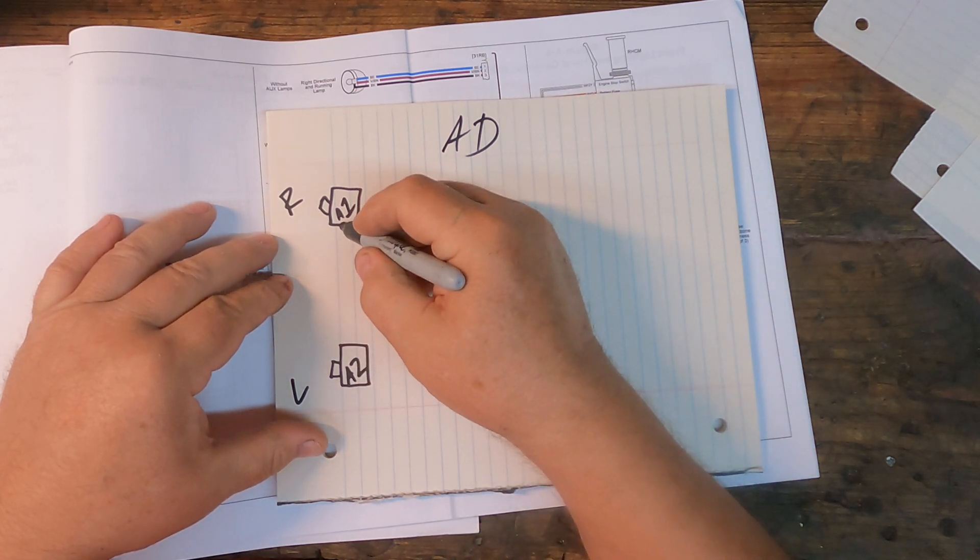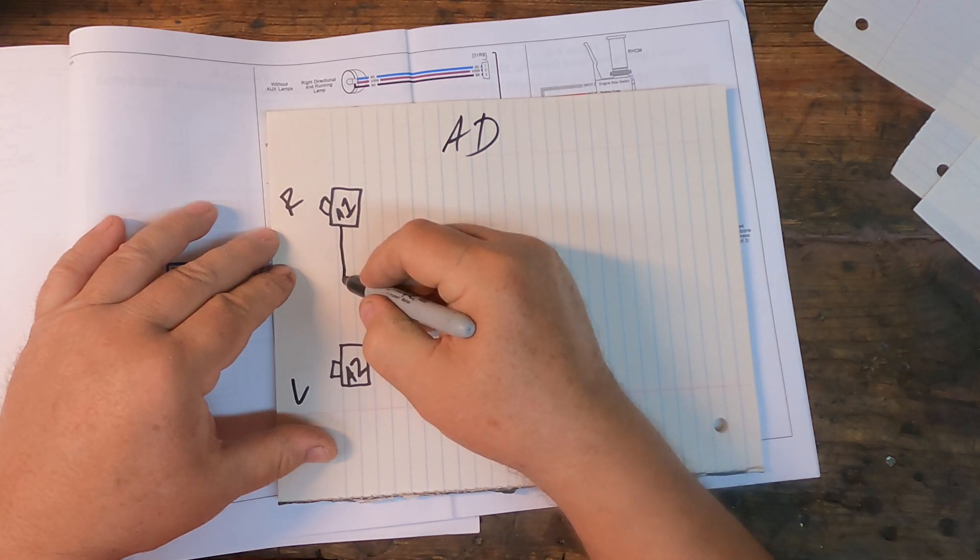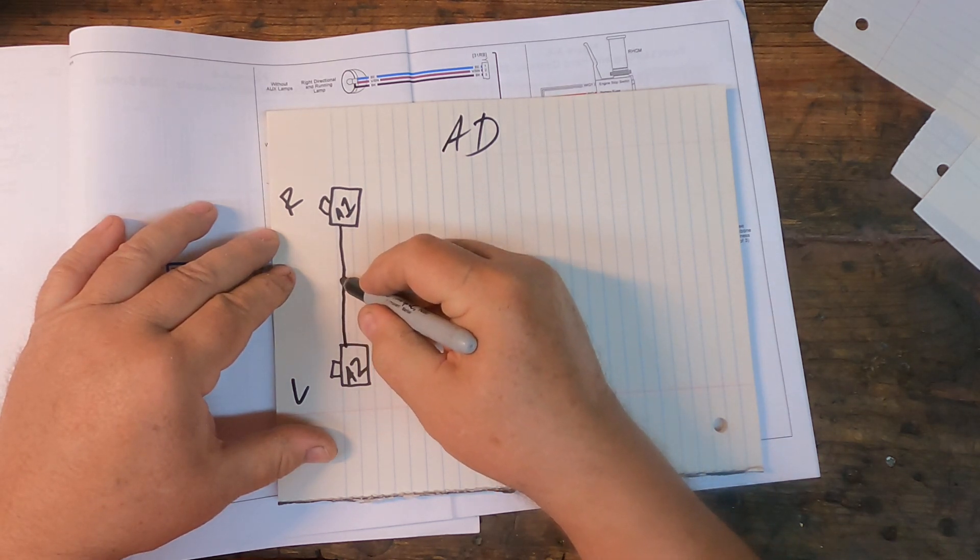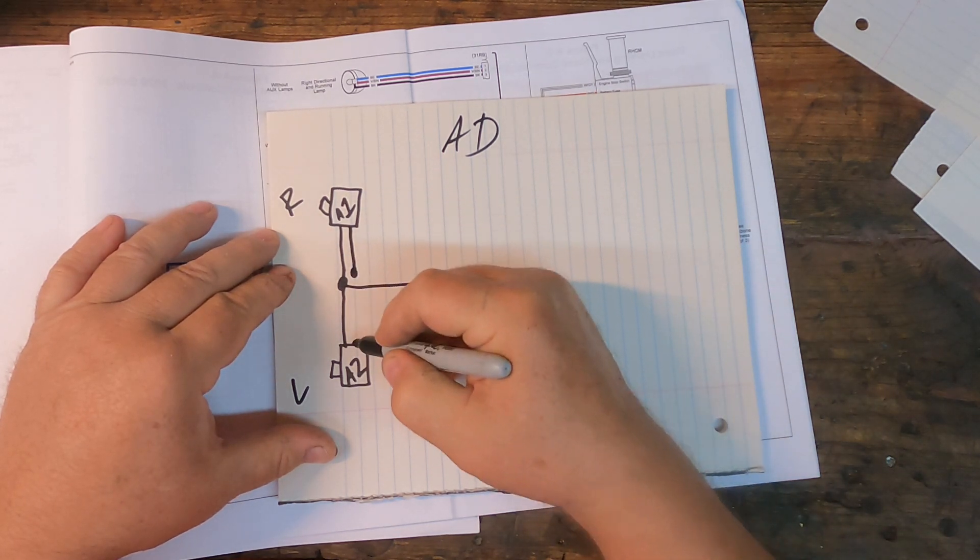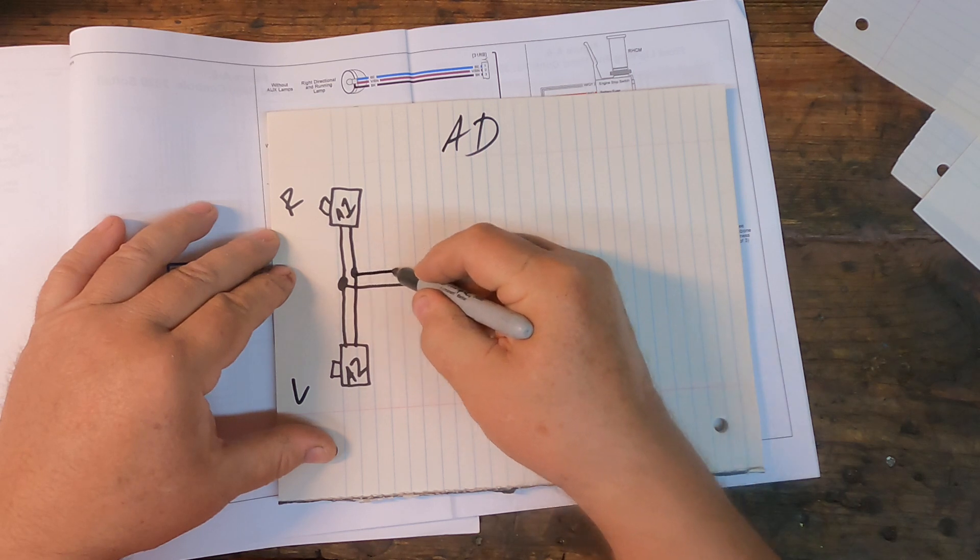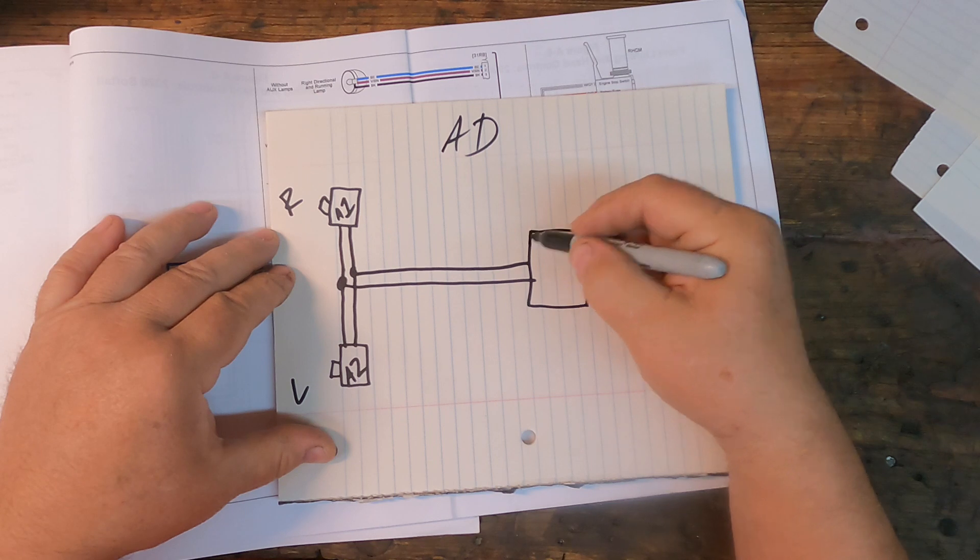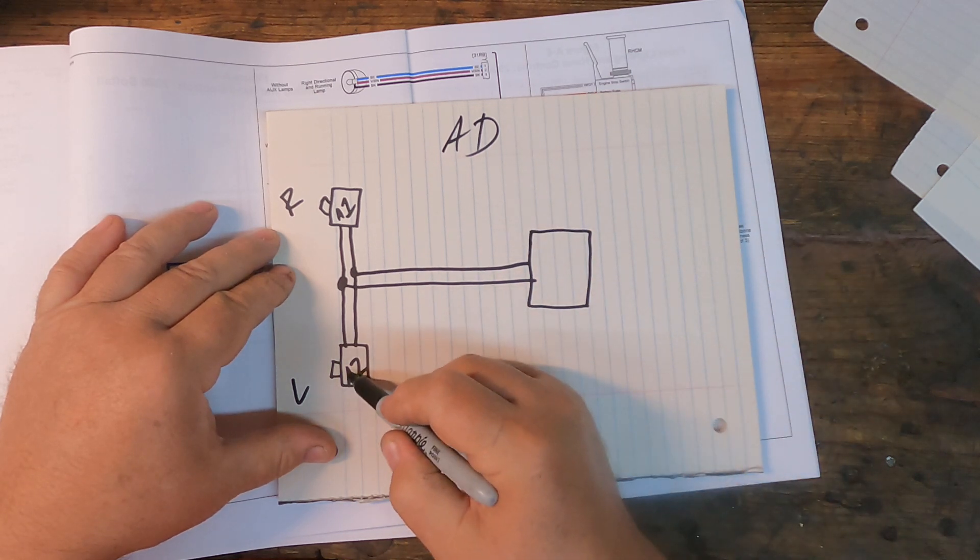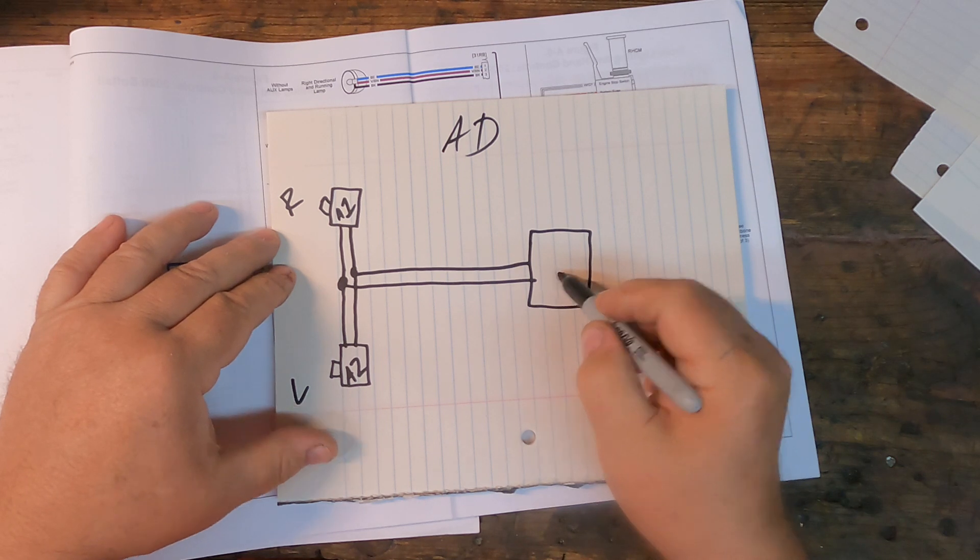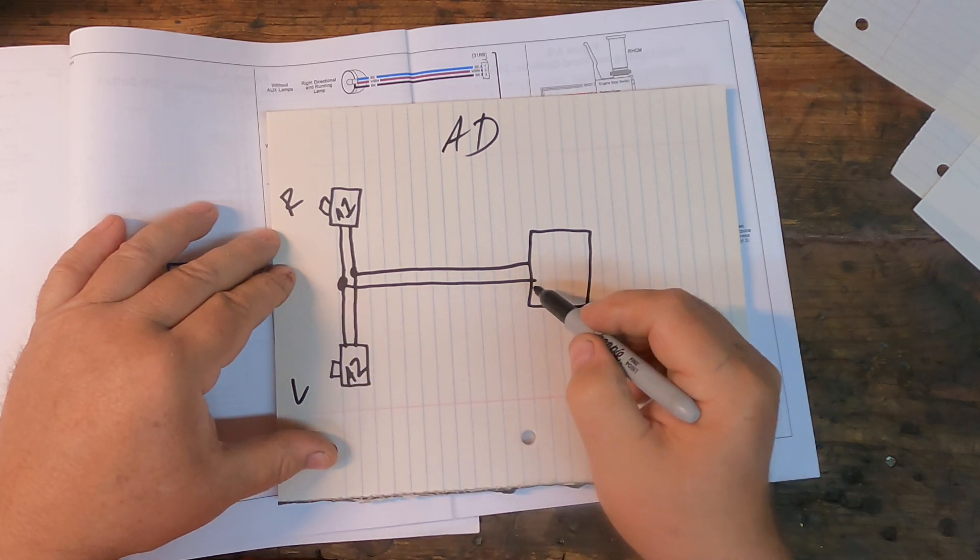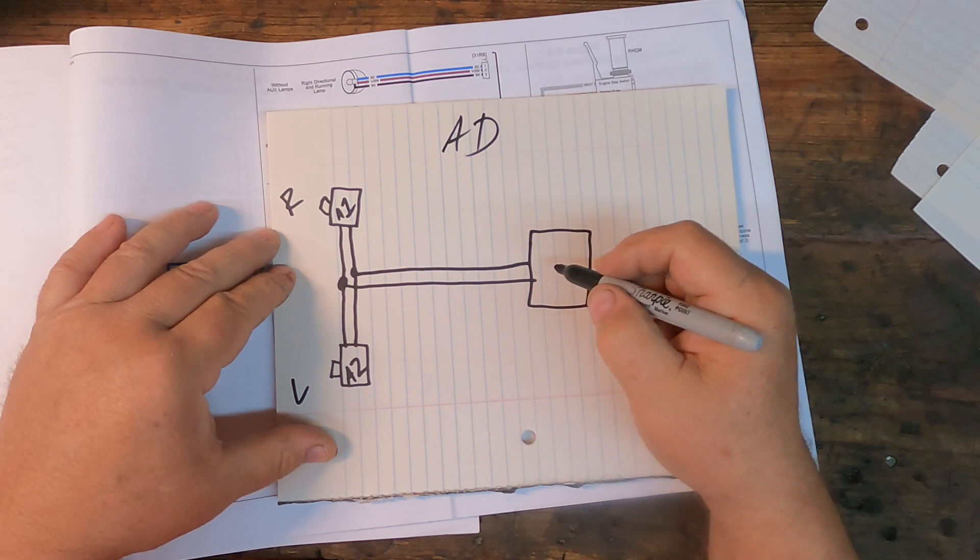So coming out of these things are four wires, but we're only going to talk about two right now. We're going to talk about two wires that are connected on a digital data bus. The digital data bus goes, of course, back to the computer. And when I press this button, it identifies itself to the computer as the left-hand turn signal module and that the computer should therefore turn on the left-hand turn signals.